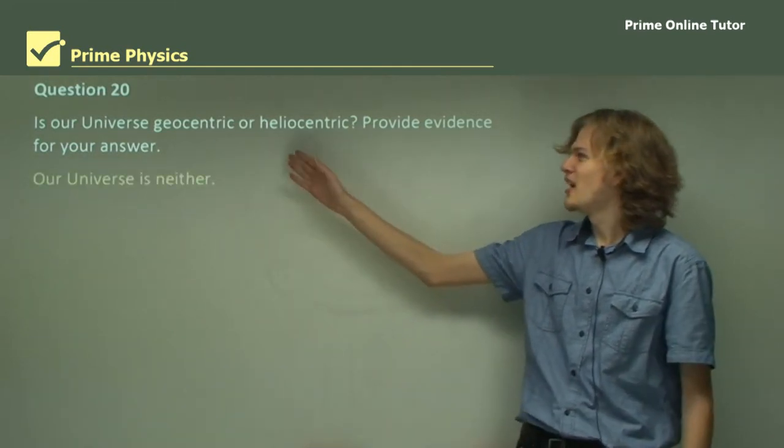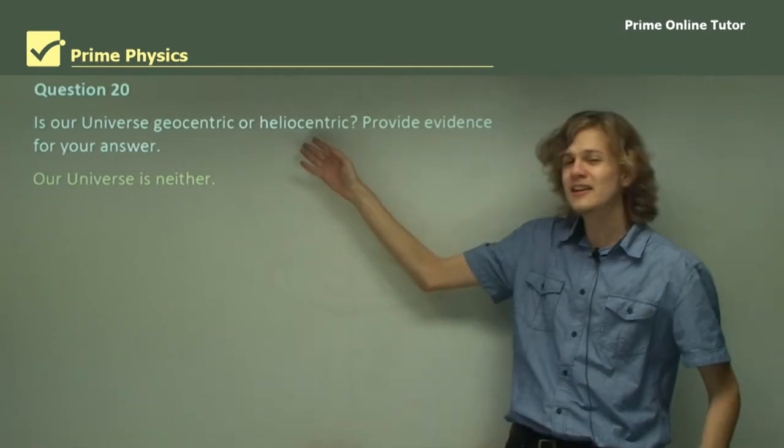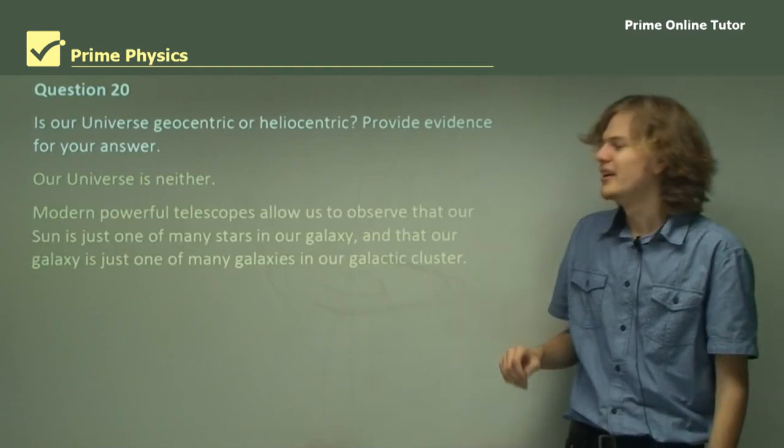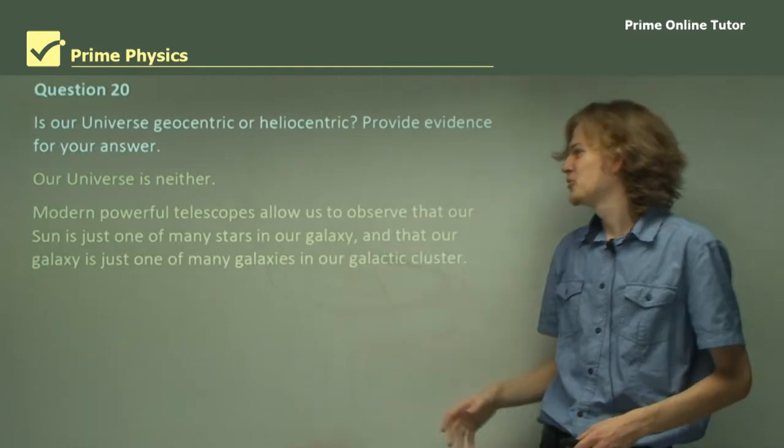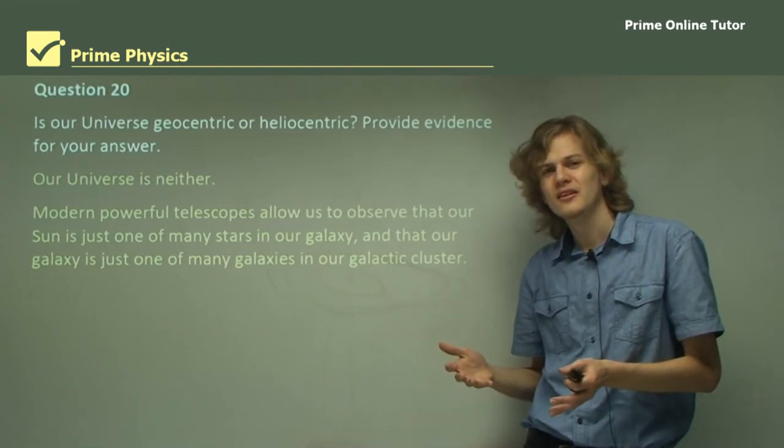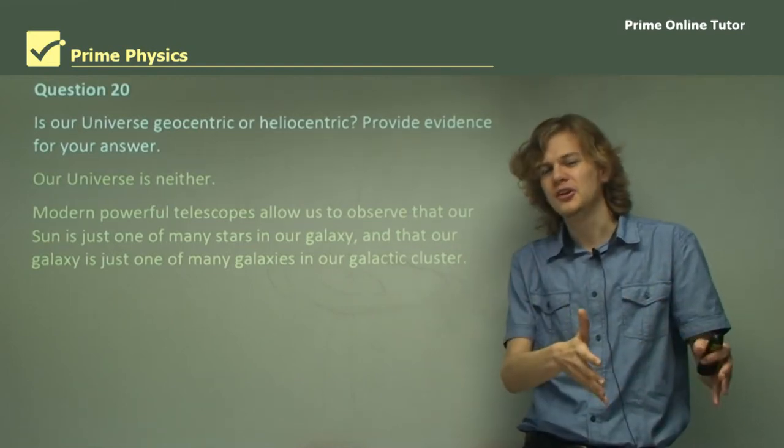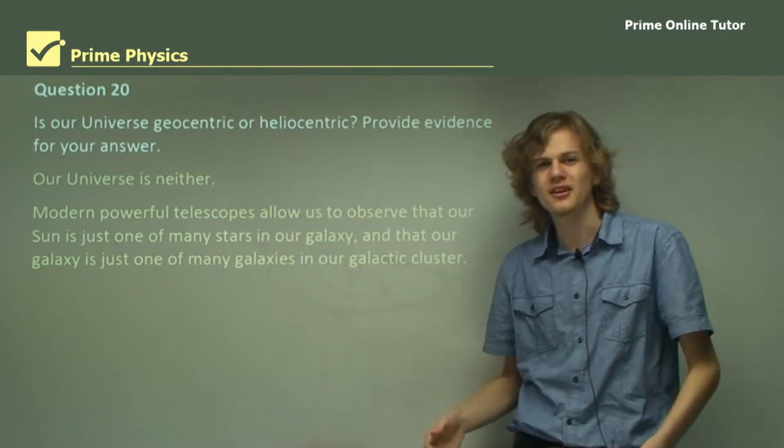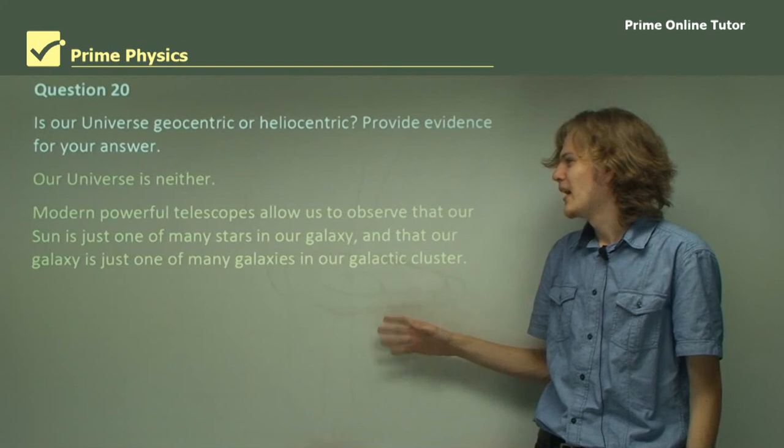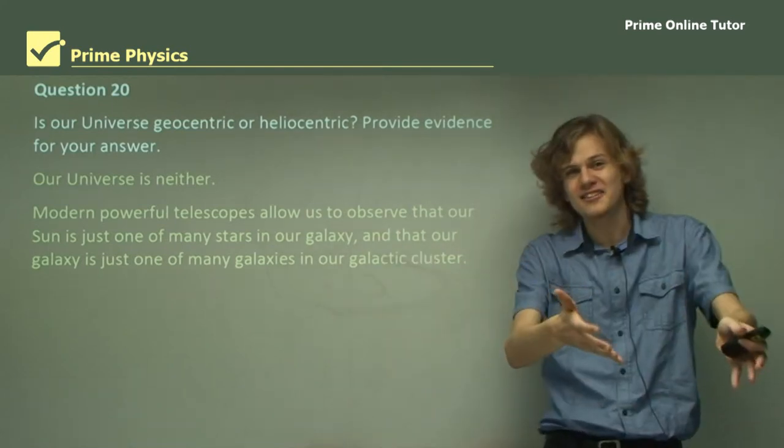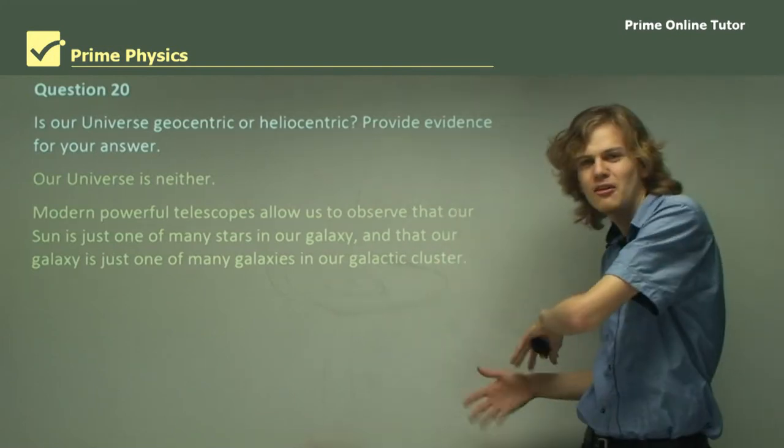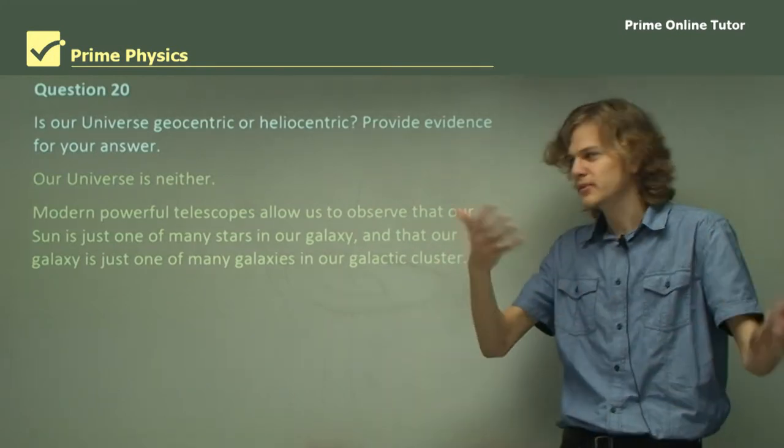Our universe is neither geocentric, with Earth at the center, or heliocentric, with the sun at the center of the universe. Modern powerful telescopes allow us to see that our sun is just one of millions and billions of stars. There's not much to separate our sun from any of the others, aside from the fact that we're orbiting around it. And our galaxy is just one of many galaxies. And our galactic cluster is just one of many galactic clusters. And our local supercluster is just one of many. You get the idea.